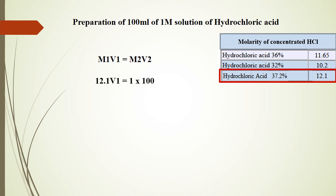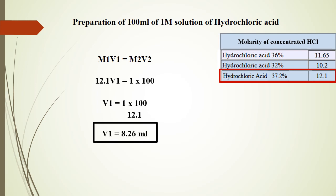Leave V1 as it is. Put M2 equal to 1 as it is the given molarity. Put 100 in V2 if you want to prepare 100 ml solution; 250 for 250 ml; 500 for 500 ml. Here I want to prepare 100 ml solution, so I put 100. After putting all the values, find out the value of V1, which is 8.26 ml.